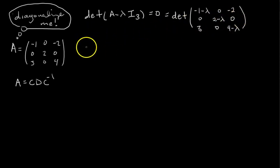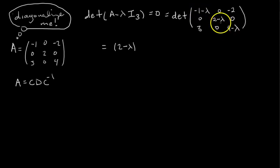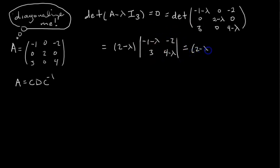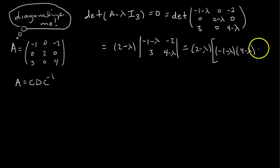We get that the determinant of this matrix equals 2 minus lambda. Is it positive or negative? Follow the checkerboard pattern — plus, minus, plus — so this is a positive term times the determinant of the 2 by 2 matrix with entries 1 minus lambda, negative 2, 3, and 4 minus lambda. Simplifying, we get (2 minus lambda) times [(1 minus lambda)(4 minus lambda) minus negative 6], which is plus 6.